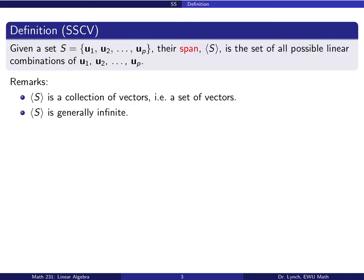Here is the definition of a span. Given a set of vectors — here our vectors are u1 through up — their span, with notation angle bracket s, is the set of all possible linear combinations of those vectors in s. As a set of all possible linear combinations, s is also itself a collection of vectors, and generally, with just one exception, s is infinite.